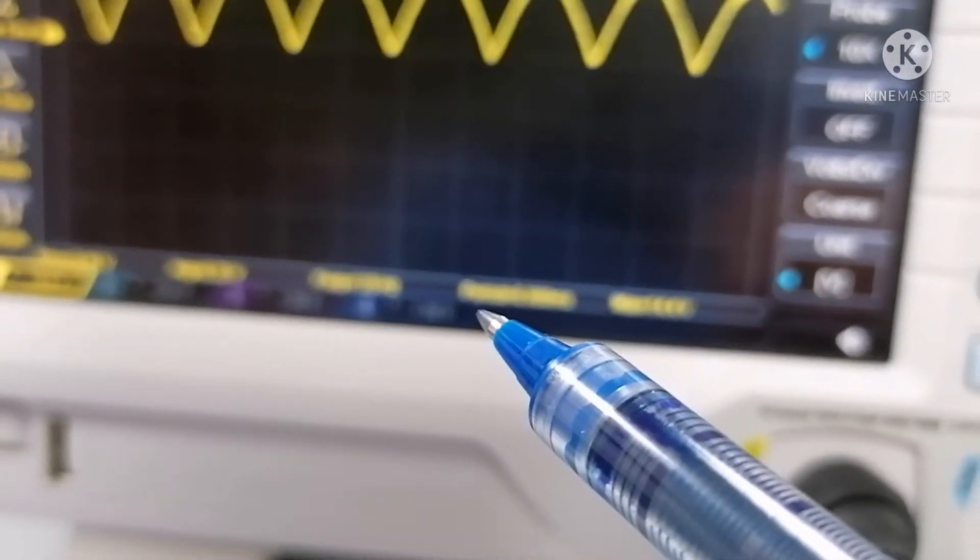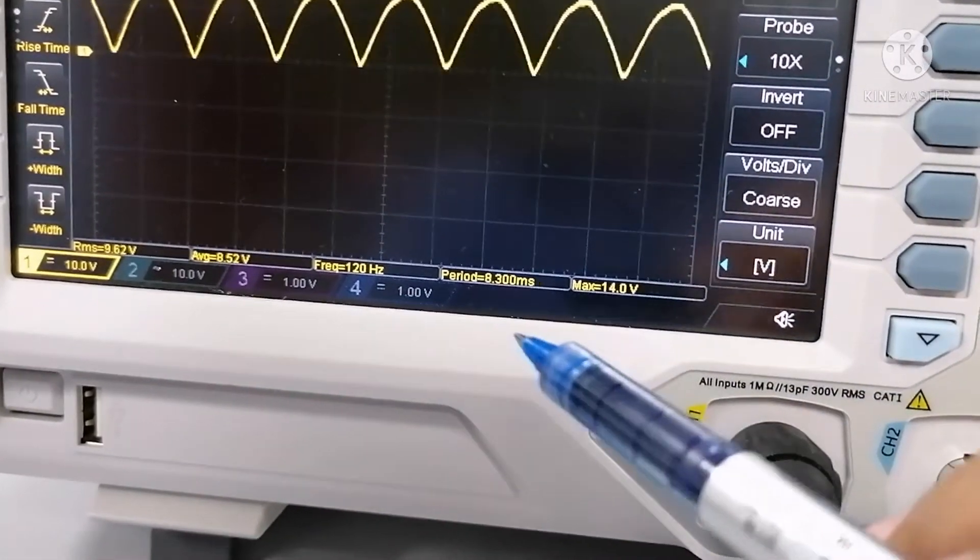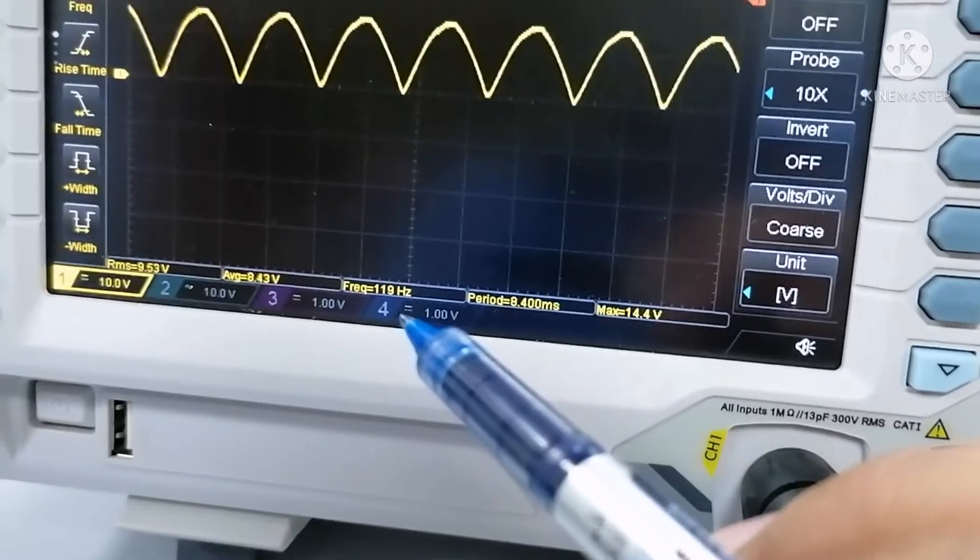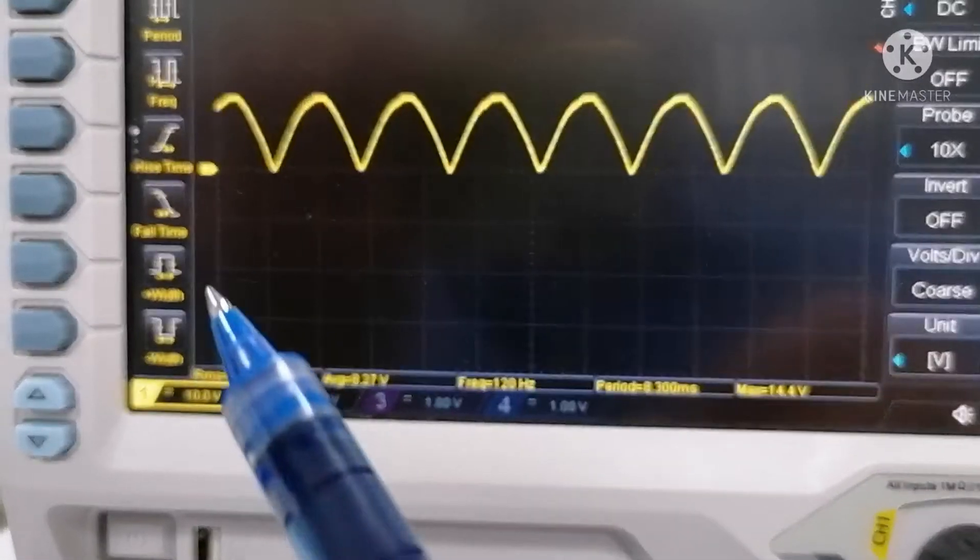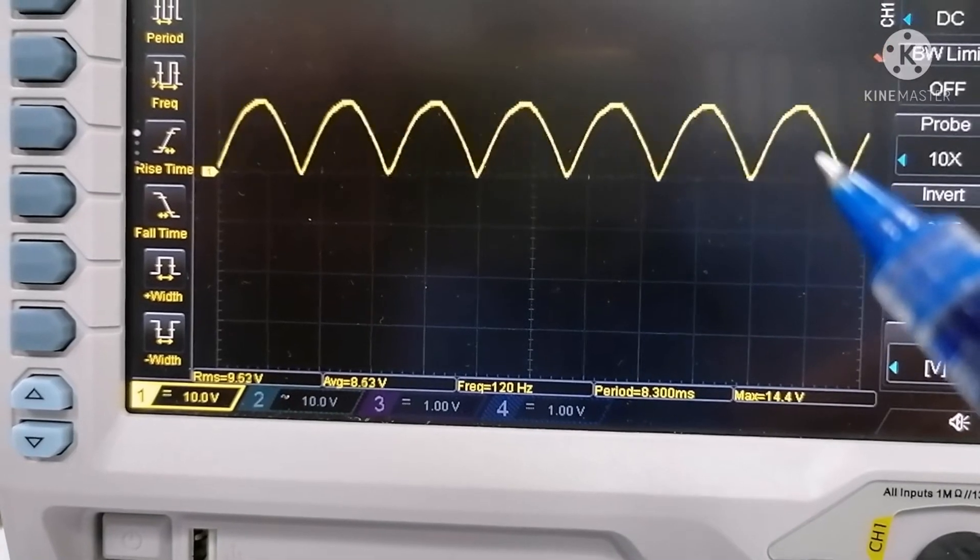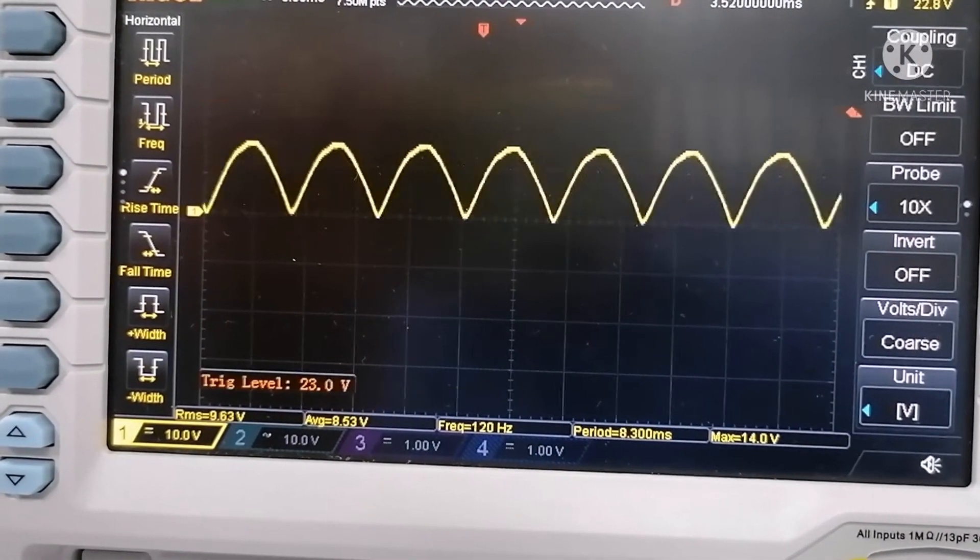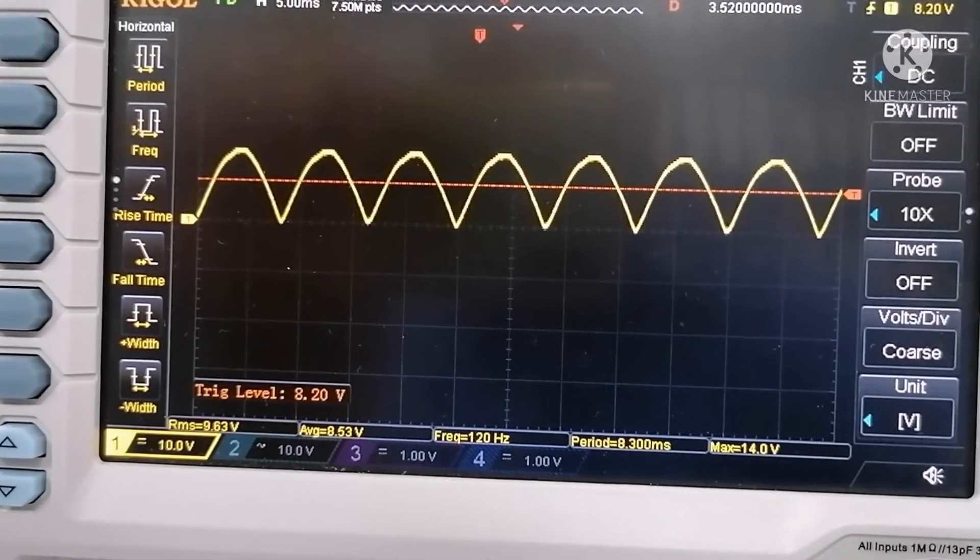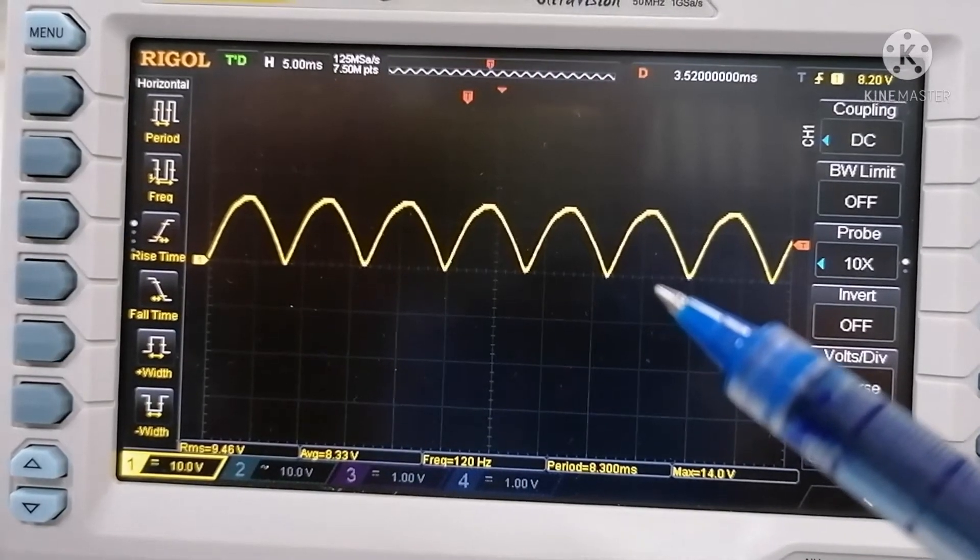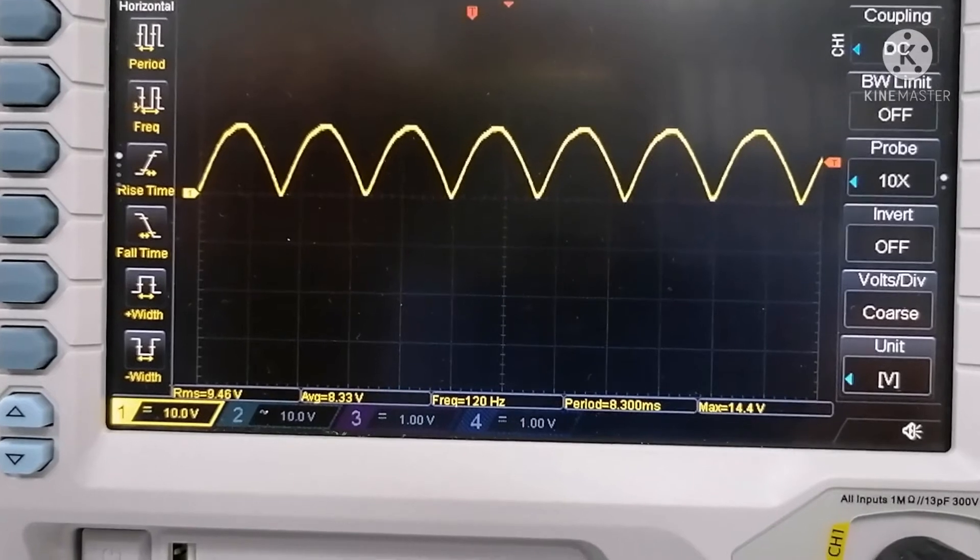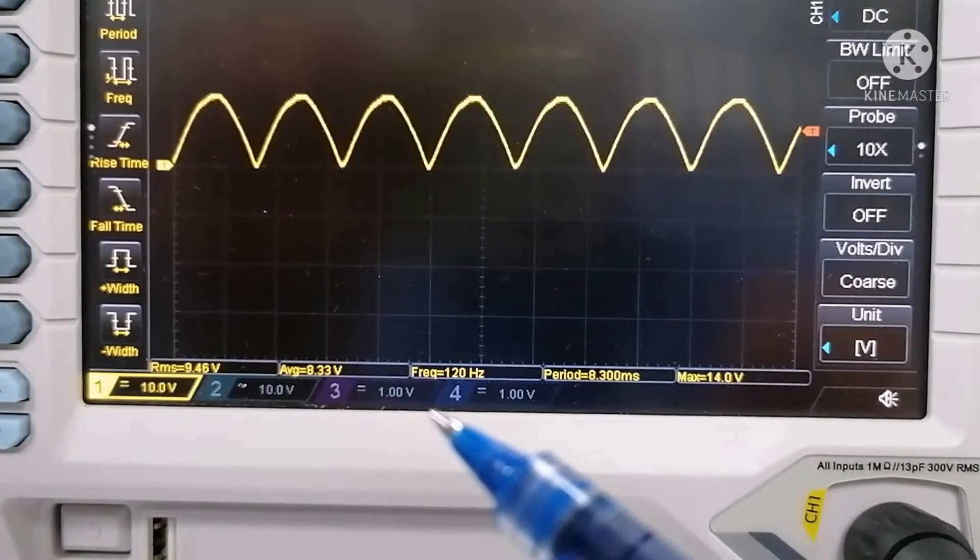And as you can see, even if the output is already DC, there is still a frequency. Why? Because the output of the rectifier is a full wave DC. Full wave DC means there is an amplitude. I will adjust this to catch the waveform. An amplitude is present and that is why we call it full wave DC. And it's very obvious because if you have an amplitude, you also have a frequency and you have a time.